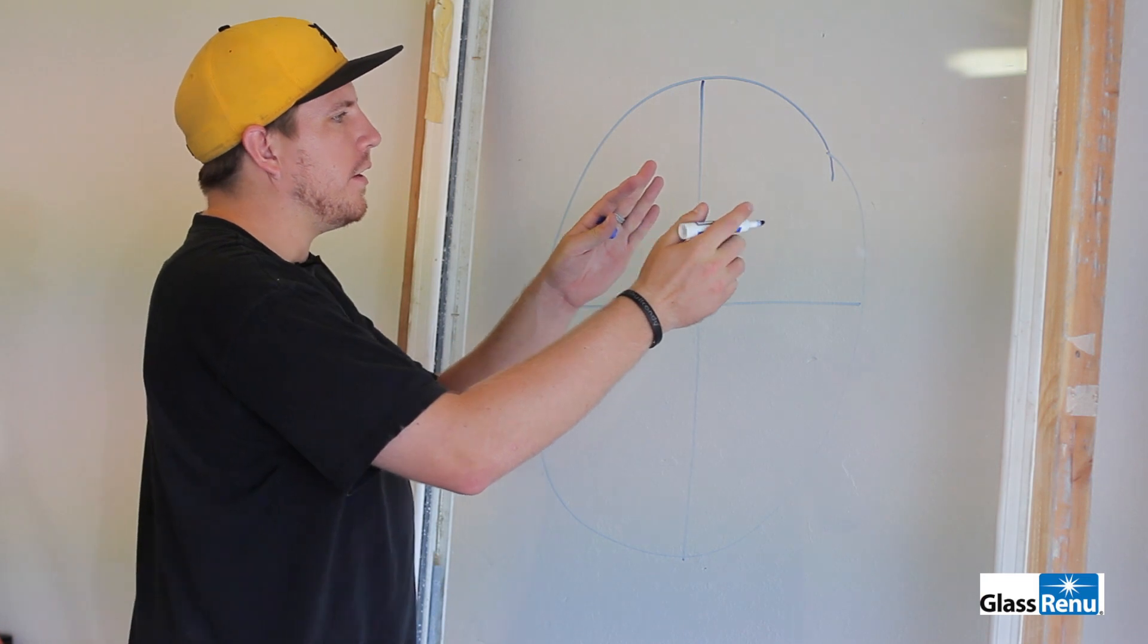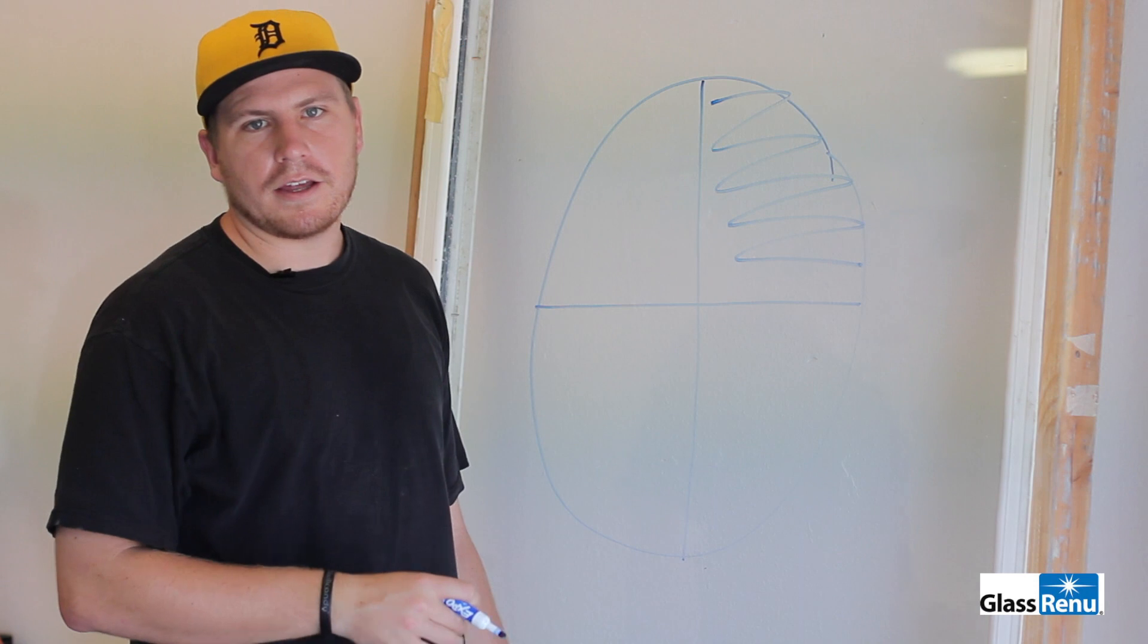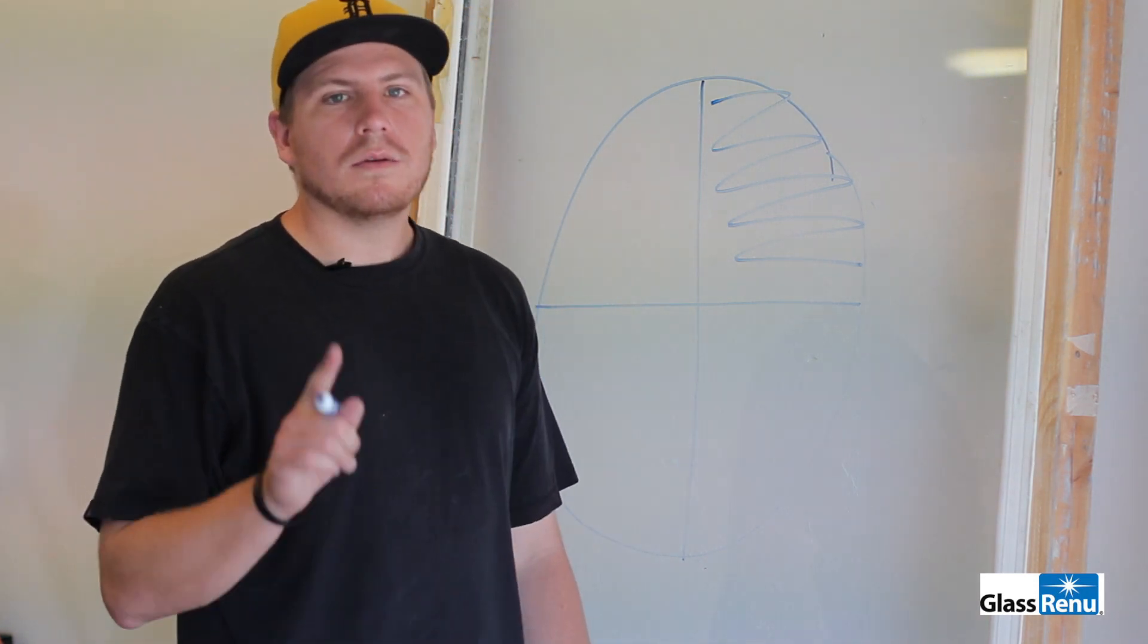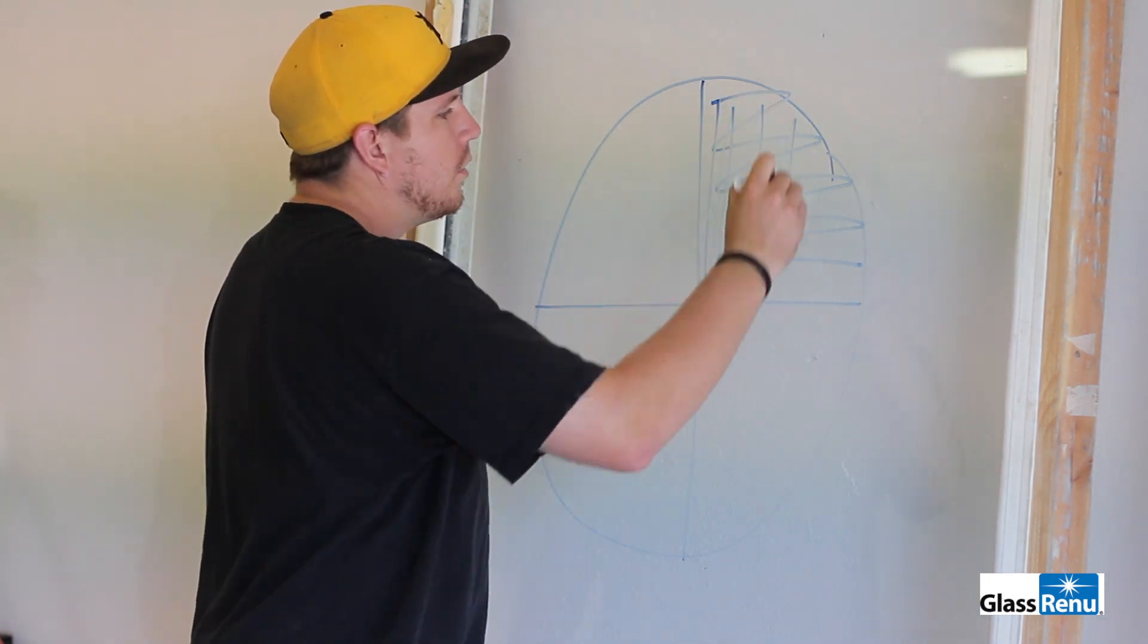Take one area, polish until you think that area is done. Now the Glass Renew rule of thumb is polish until you think it's complete, then polish one more time after that. So go ahead and polish this area one last time.